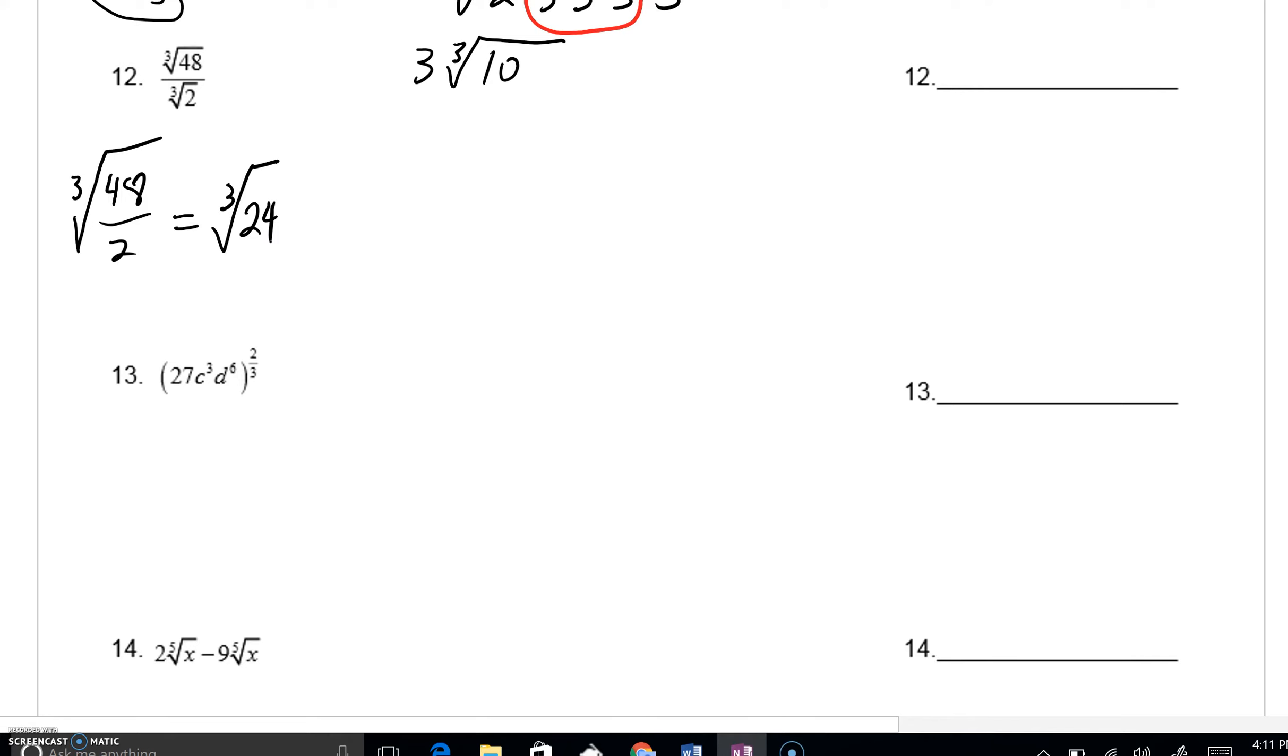So our next step is wondering if we could break 24 down with a prime division tree. Try a 2, 24 divided by 2 is 12. Try 2 again, 12 divided by 2 is 6. Try 2 one last time, 6 divided by 2 is 3. So this cube root of 24 is really, if we break this down, 2 times 2 times 2 times 3.